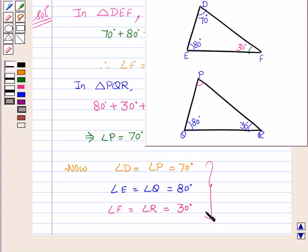So, from this we conclude that triangle DEF is similar to triangle PQR by AA criterion of similarity.